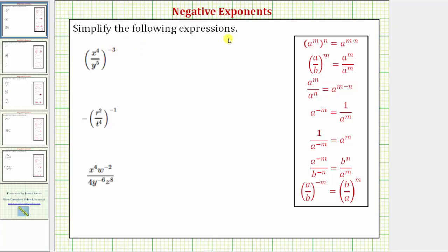We're asked to simplify the following expressions. The expressions are considered simplified only when written with positive exponents. So looking at the first expression, we have x to the fourth over y to the fifth raised to the power of negative three. There are two ways to simplify the expression, and we will discuss both methods.